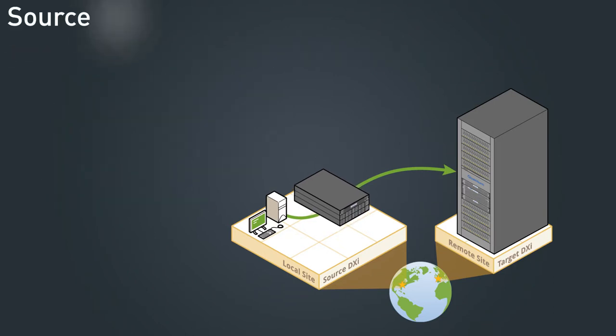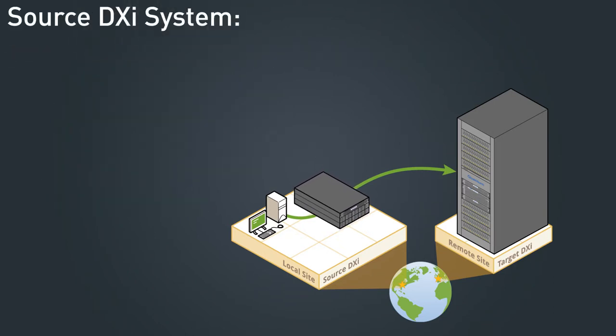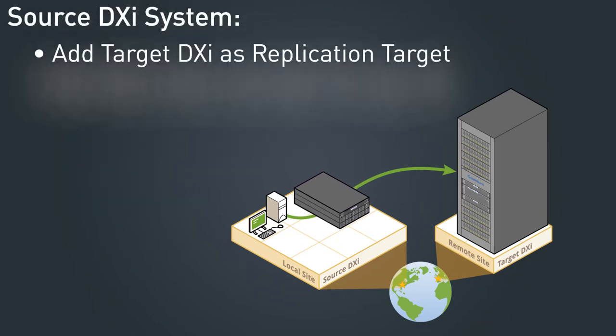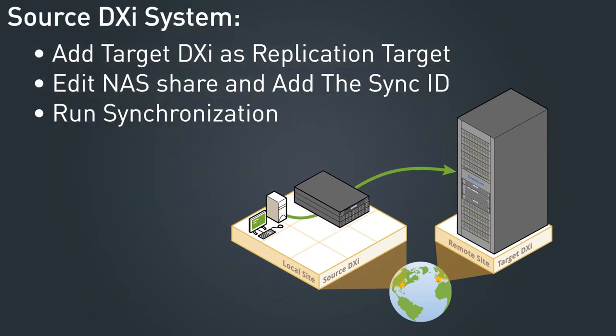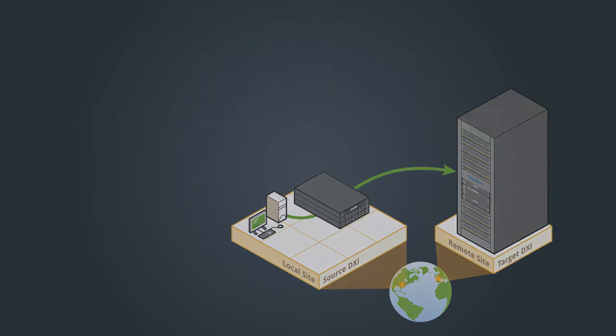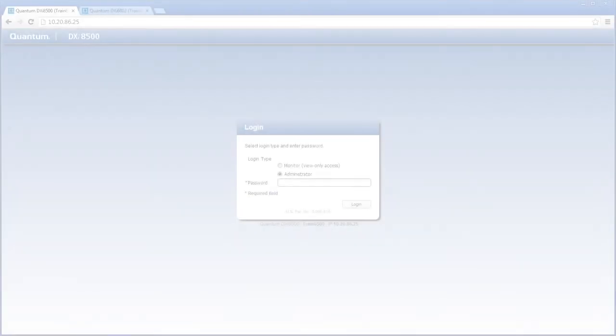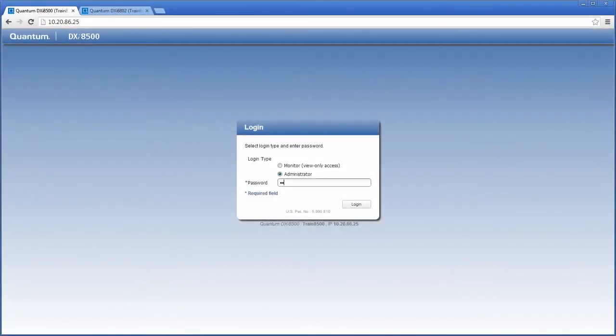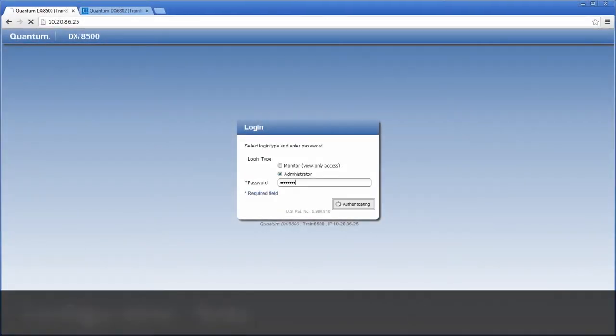Then, on the source DXi, I need to add the target DXi as a replication target, configure a sync ID for the share, and then run synchronization. So, let's start by logging in to our target DXi.